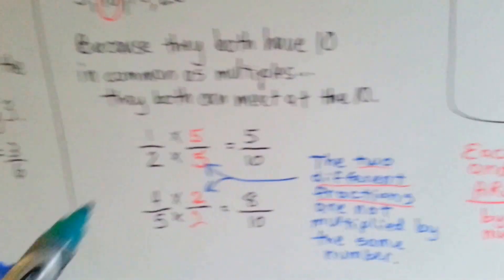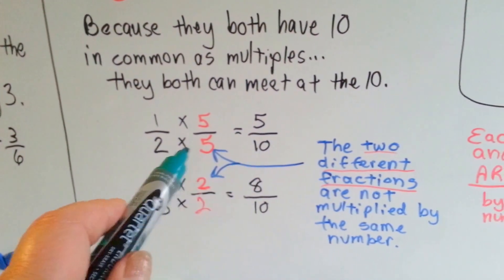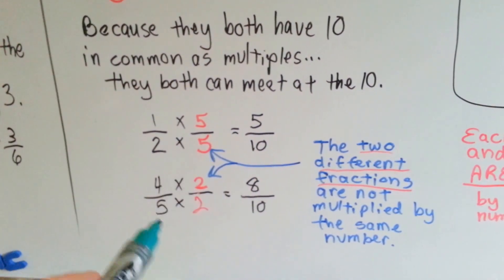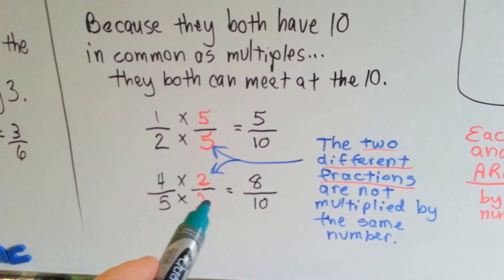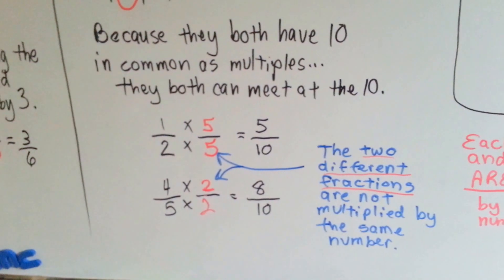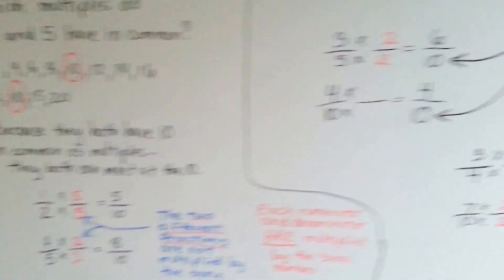The 2 is farther away from the 10, so it has to be multiplied by a bigger number. The 5 is bigger than 2, it's closer to 10 on a number line, so it gets multiplied by a smaller number. It had a shorter distance to go.